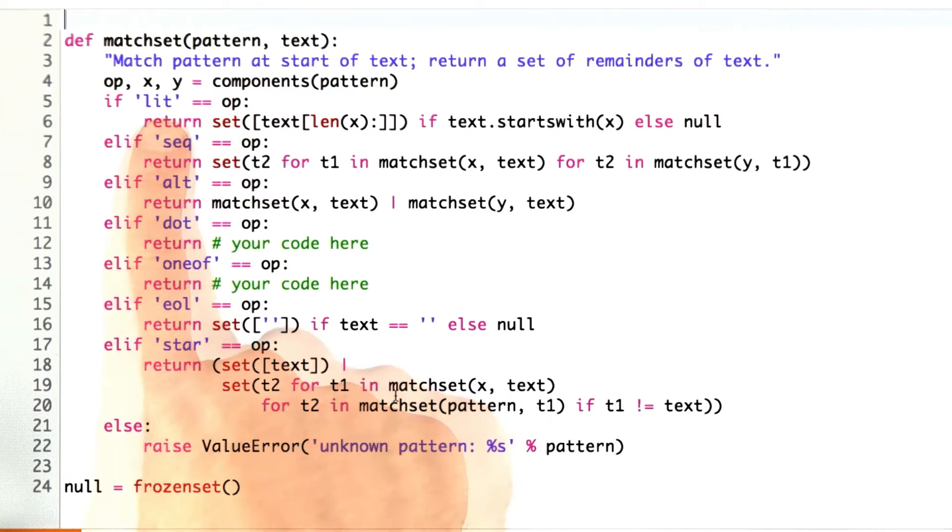For example, the literal will only have an x component. Sequence and alternative will have both an x and a y. We'll see how that component is written later, but for now, just assume it's going to pick out the right pieces.